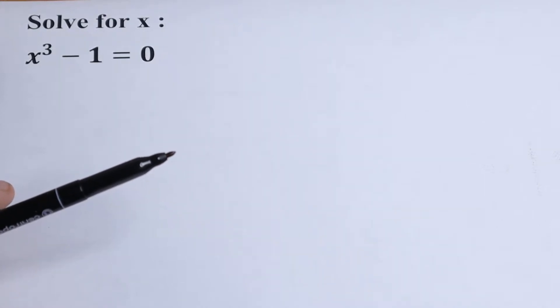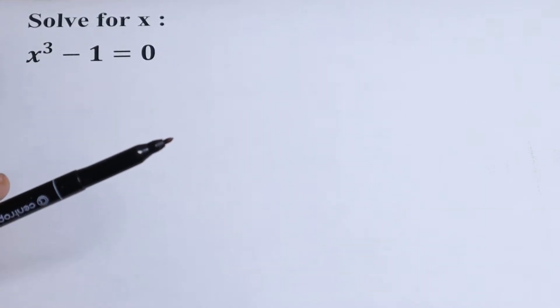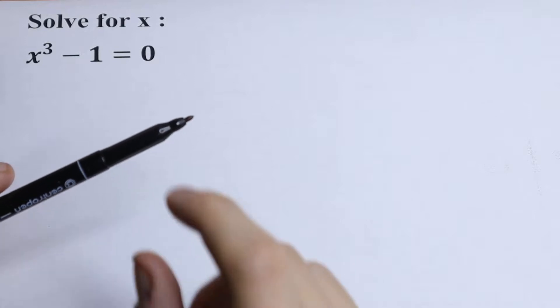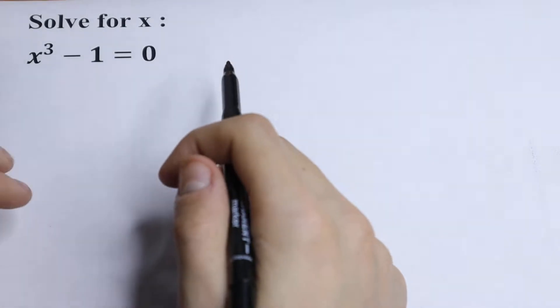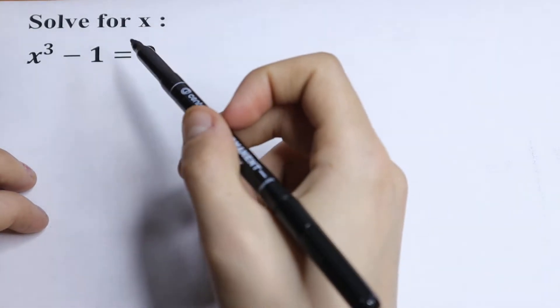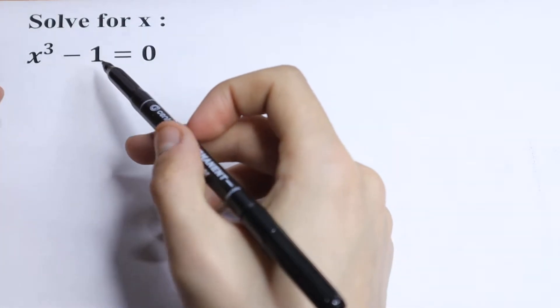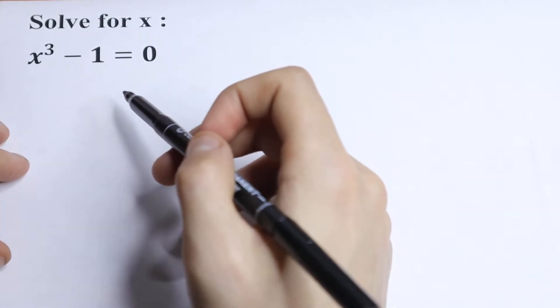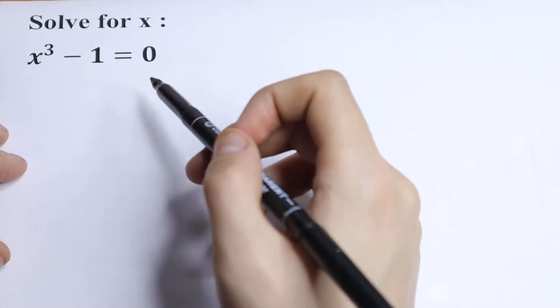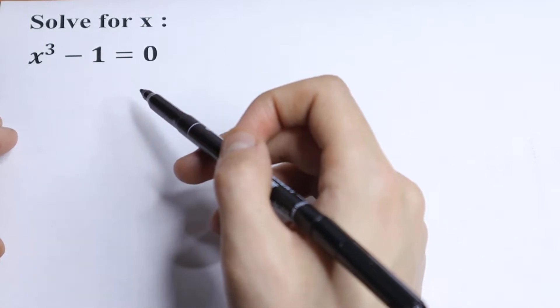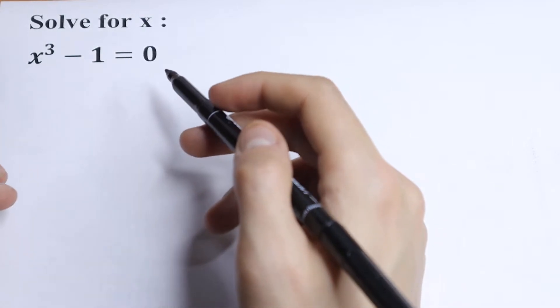Hello everyone, welcome back to MathMood. Here we have an interesting equation: x cubed minus 1 equals 0. Of course we can write that x equals 1 and this will be enough, but let's find all roots.